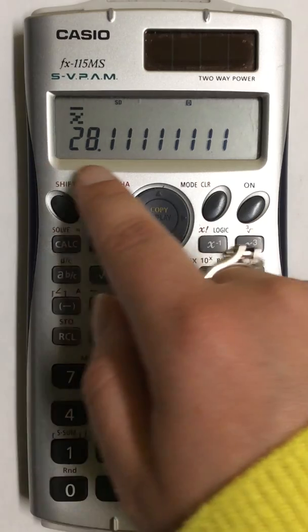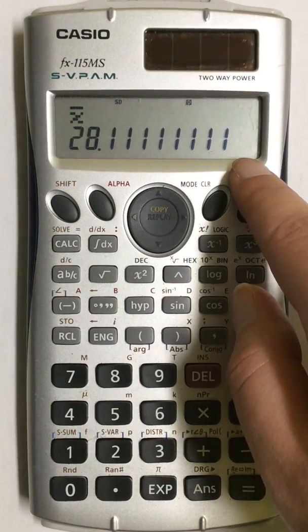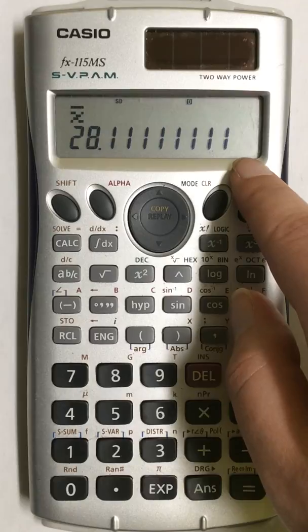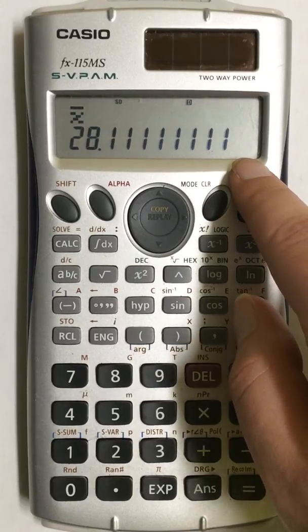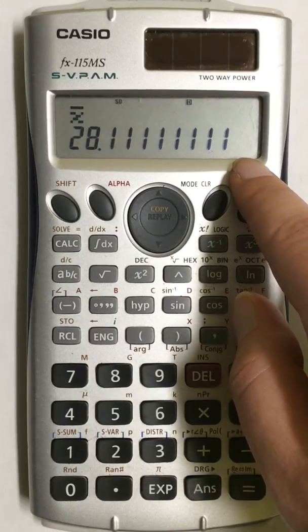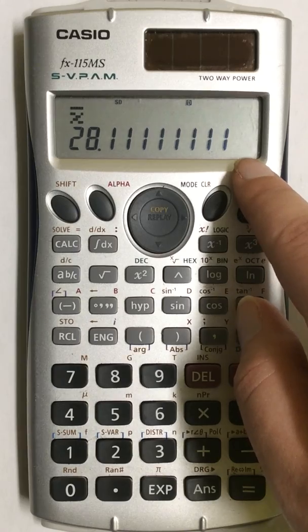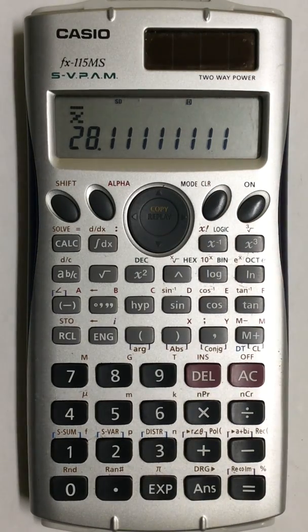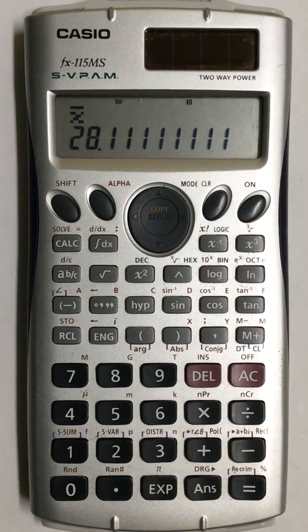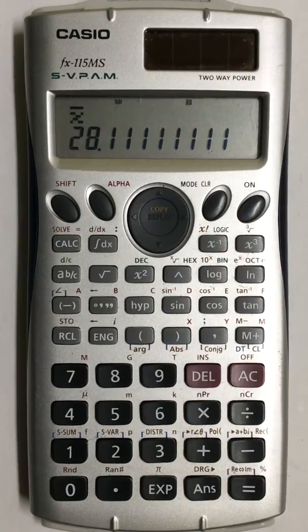My mean now shows on the screen, and then you can round it off based on your instructor's directions. So this is how to find the mean in your Casio FX 115 MS scientific calculator.